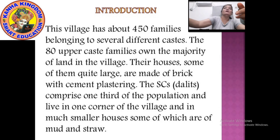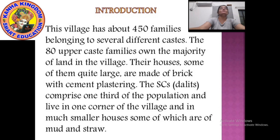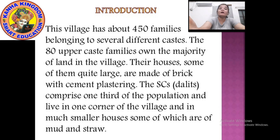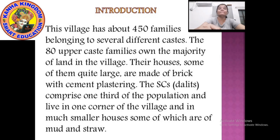Which type of people live in village Palampur? There are two types of people — rich and poor. Here they are given as upper caste and lower caste people. Upper caste people are about 80 families who own their own land. Their houses are pakka houses, big houses made up of cement and bricks. The schedule caste people live at one corner of the village; their houses are very small and made up of mud and straw.